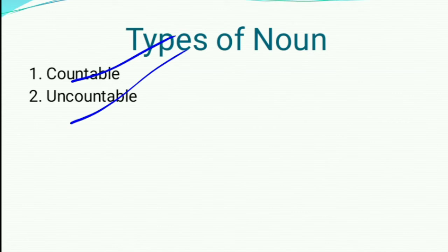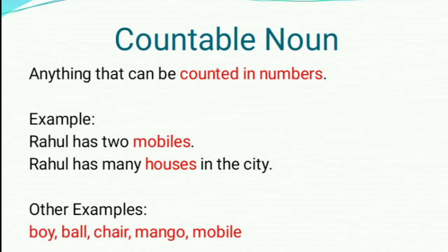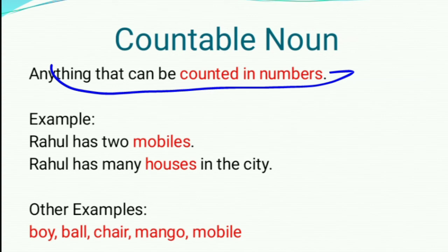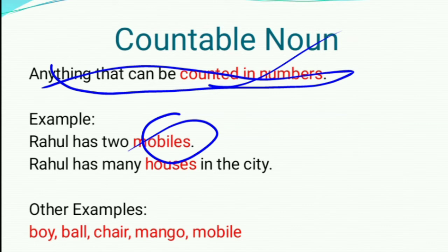What is a countable noun? Anything that can be counted in numbers. For example, Rahul has two mobiles. You can see the word in red color — mobile — that is a noun.